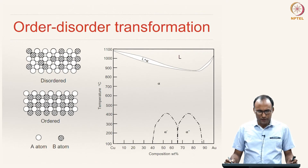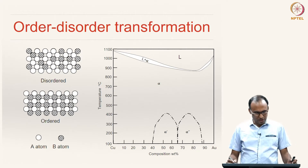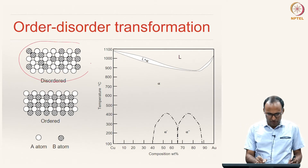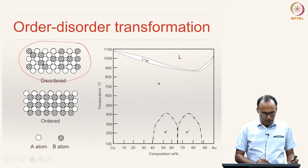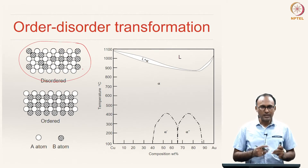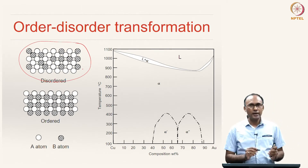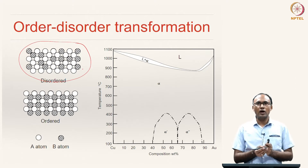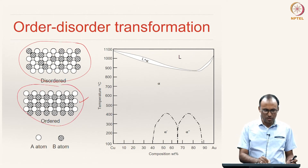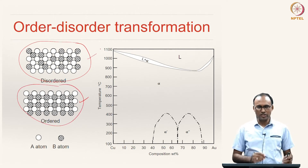The next kind of transformation is order-disorder transformation. In a disordered system, A-type and B-type atoms have no specific order in their arrangement, whereas in an ordered system they attain a specific ordering arrangement. If a solid solution has such an ordered structure, it is called an ordered solid solution; otherwise it is a disordered solid solution.